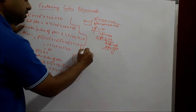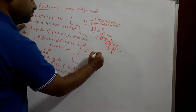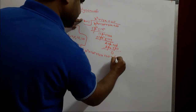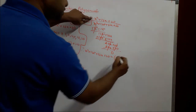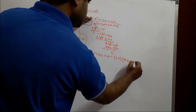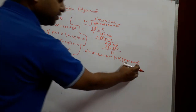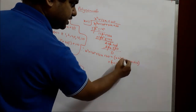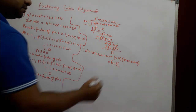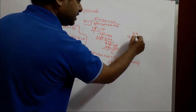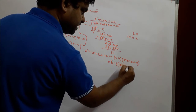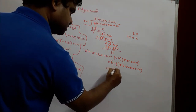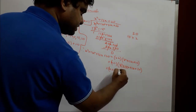Therefore, x³ + 13x² + 32x + 20 = (x + 1)(x² + 12x + 20). Now we need to factor x² + 12x + 20 by splitting the middle term. We need two numbers that multiply to 20 and add to 12, which is 10 and 2. So we write x² + 10x + 2x + 20.